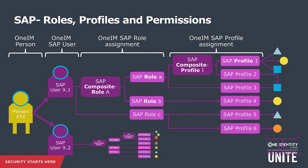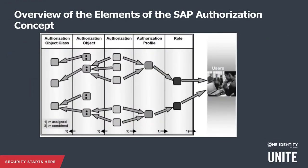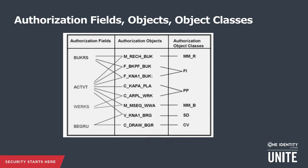One Identity Manager supports profile assignments as well as role assignments to SAP user accounts, and the user account is linked to the single person in the identity manager. To understand how permissions in SAP work, the profile or authorization profile combines one or more authorizations. Authorization objects and authorization object classes are assigned to authorizations. Authorization objects contain authorization fields, and authorization objects are part of authorization object classes.